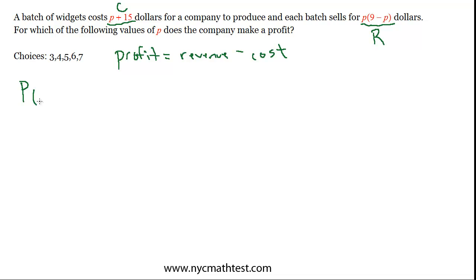So pretty quickly we can write a profit function. P as a function of little p, which is the number of batches of widgets. So revenue is, and I'm going to distribute this as I write it down, so I'll write that as 9p minus P squared minus the cost, which is P plus 15. Don't forget your grouping symbols, that would be an easy mistake to make.